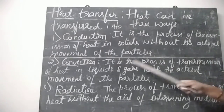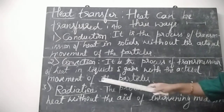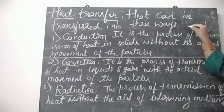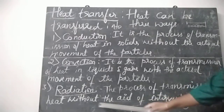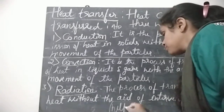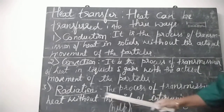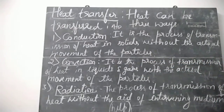Convection is the process of transmission of heat in liquids and gases with the actual movement of the particles. Particles move from one point to another — that process is called convection. Radiation is the process of transmission of heat without the aid of an intervening medium.